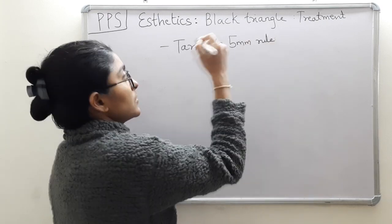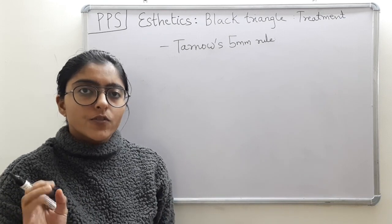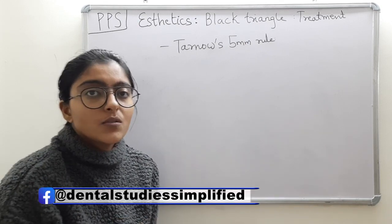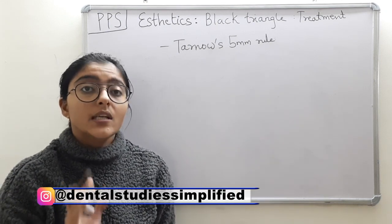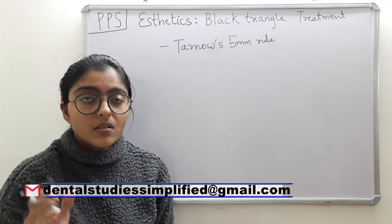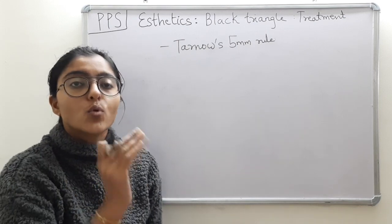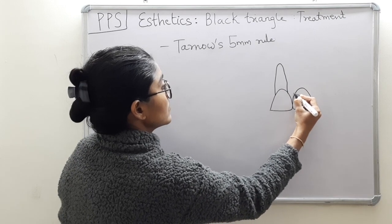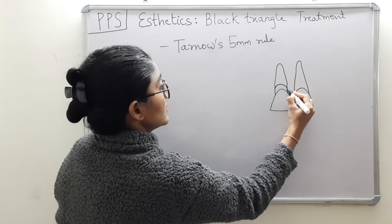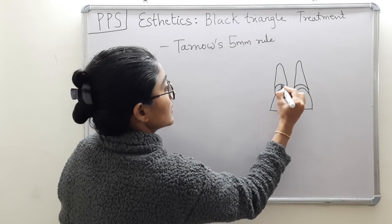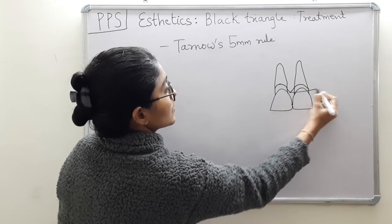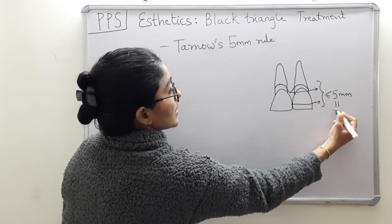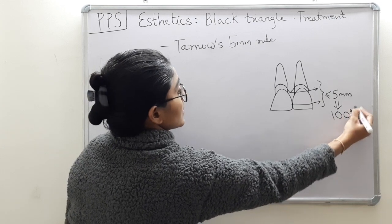Tarnow conducted an observational study on humans in the year 1992 wherein he tried to correlate the presence of interdental papilla — just the presence, nothing to do with the amount of papillary fill. He correlated whether the papilla is present or absent with the vertical distance between the bone crest and the contact point. If this distance was found to be less than or equal to 5mm, then papilla was present 100% of the time.